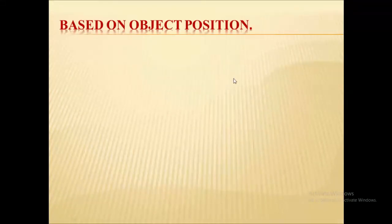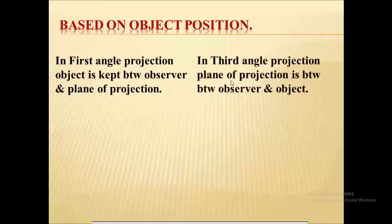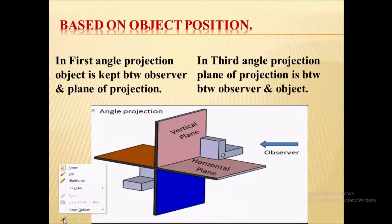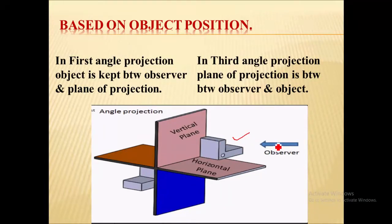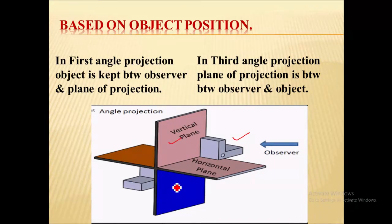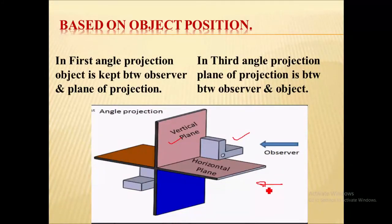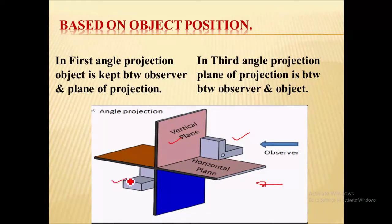Next, based on the object position. In case of first angle projection, the object is placed between the observer and the plane of projection, where the plane of projection is the vertical plane. While in case of third angle projection, the plane of projection is in between the observer and the object.